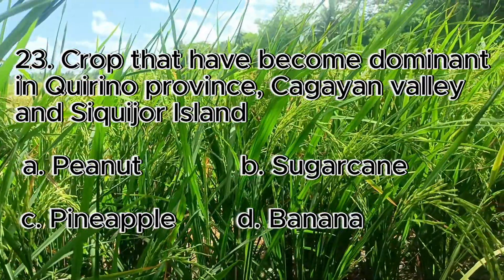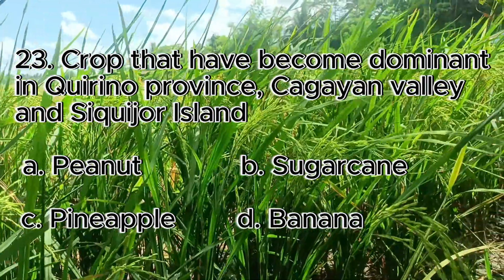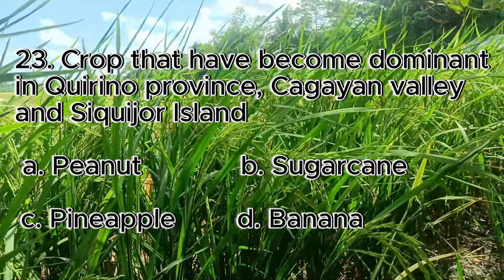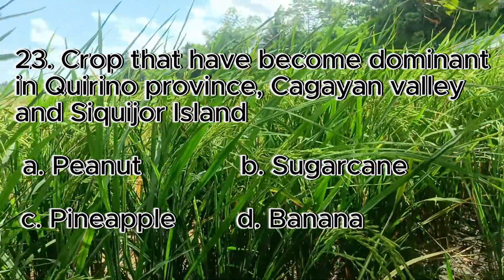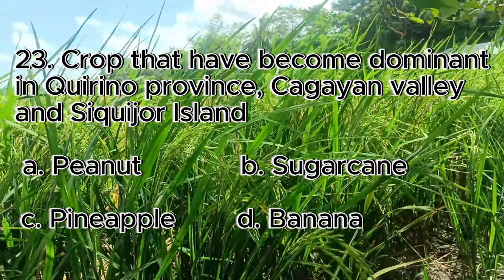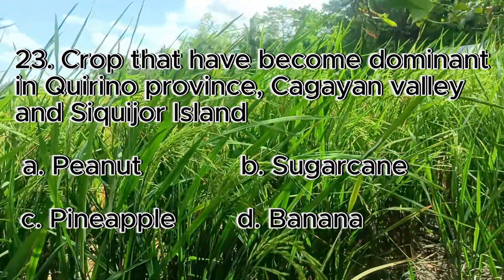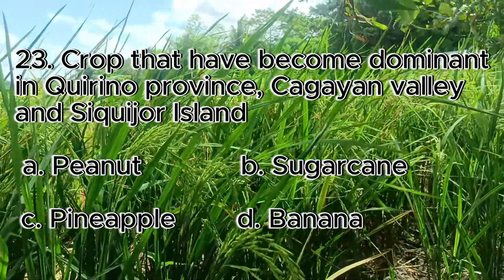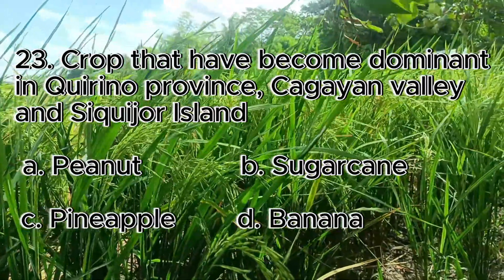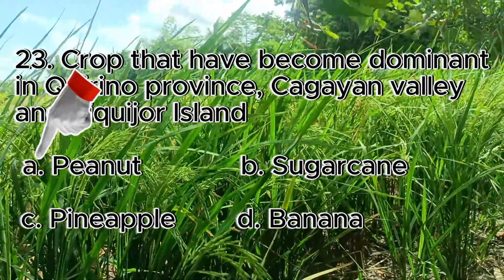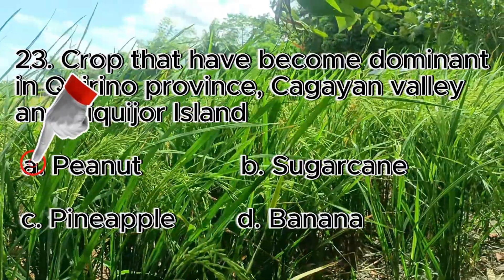Number 23. Crop that has become dominant in Quirino Province, Cagayan Valley, and Siargao Island. A. Peanut, B. Sugarcane, C. Pineapple, D. Banana. The answer is letter A, peanut.